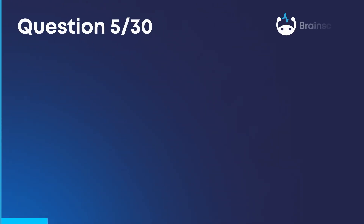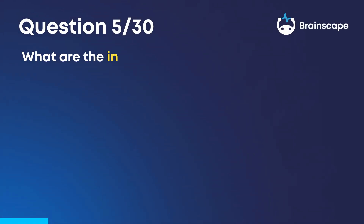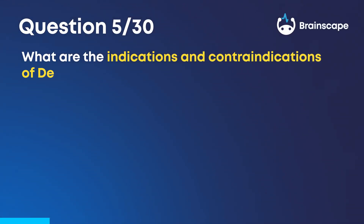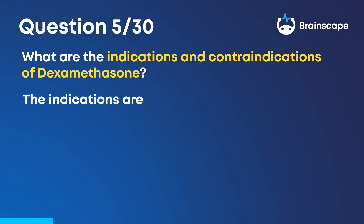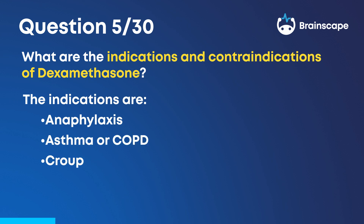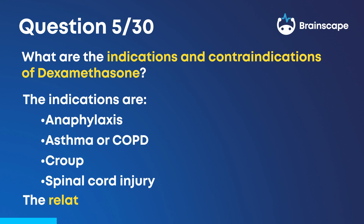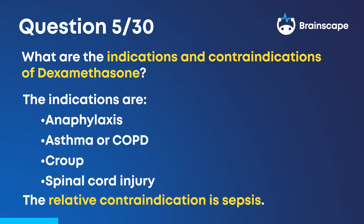Question 5. What are the indications and contraindications of dexamethasone? The indications are anaphylaxis, asthma or COPD, croup, and spinal cord injury. The relative contraindication is sepsis.